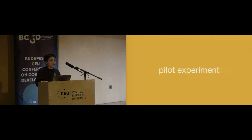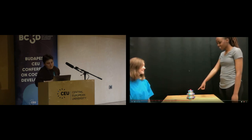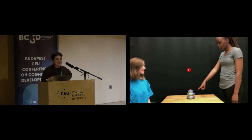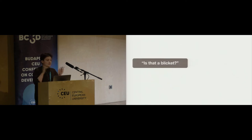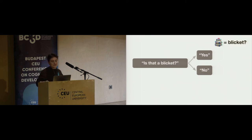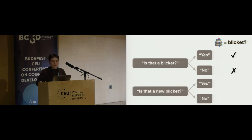I set out to test whether children were able to pick up on that distinction. We designed a pilot experiment in which children watched exchanges between interlocutors about novel objects. An interlocutor asks 'is that a new blicket?' and the other responds 'no.' Children were then asked to choose between two objects — one seen in the video and referred to, and one totally new — to find the blicket. In some conditions the question was 'is that a blicket?' crossed with yes/no responses; in others, 'is that a new blicket?' also crossed with answer type.